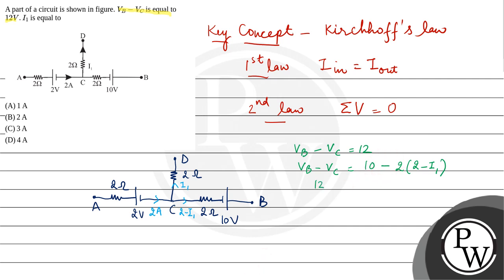VB minus VC equals 12, which equals 10 minus 4 plus 2I1. So 12 equals 6 plus 2I1. Therefore, 6 equals 2I1, and I1 equals 3 amperes.